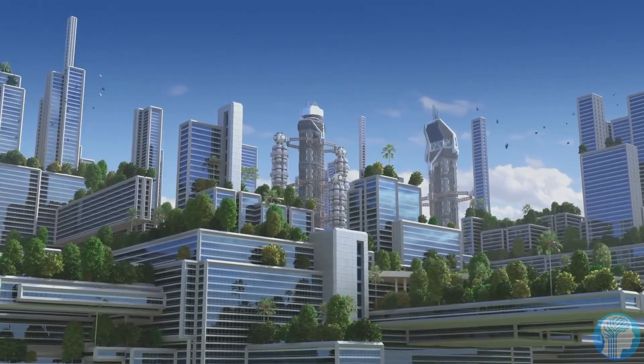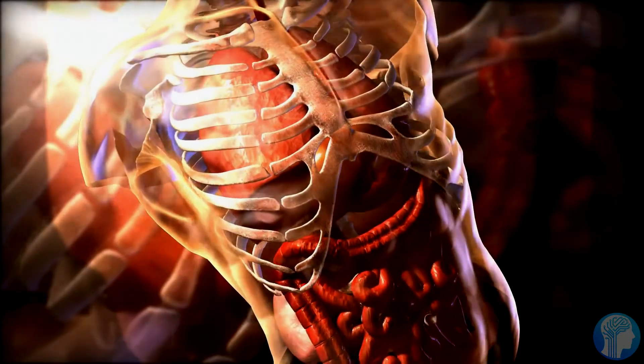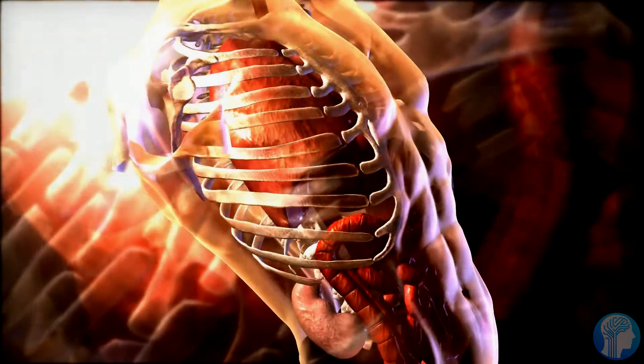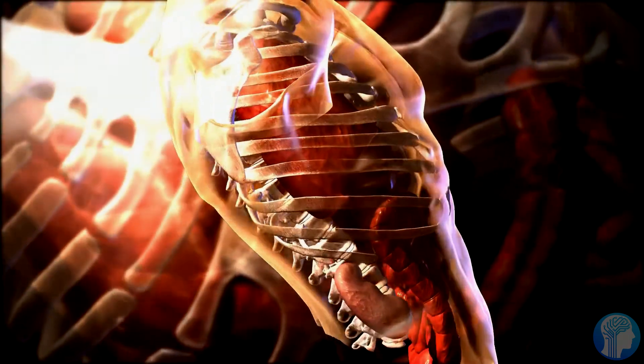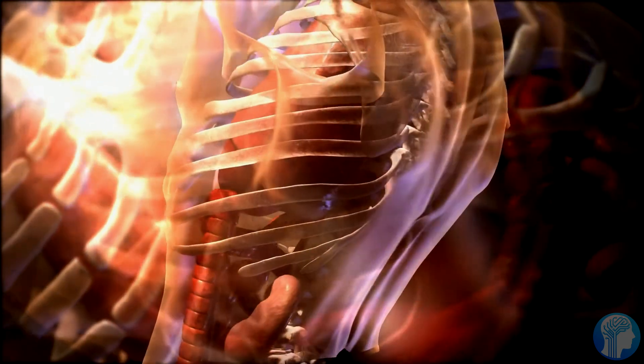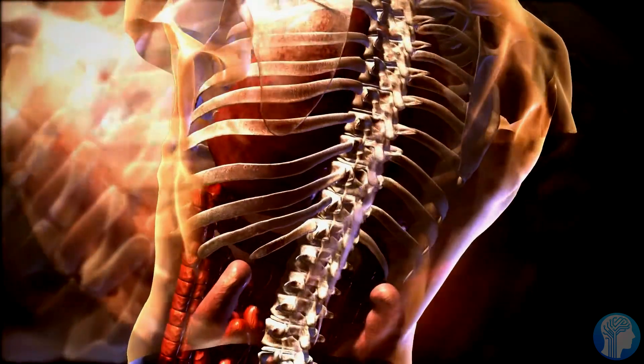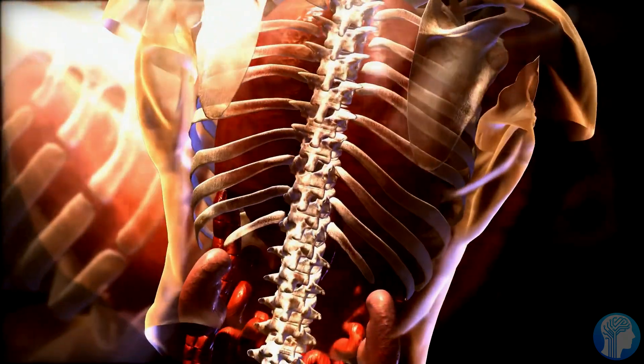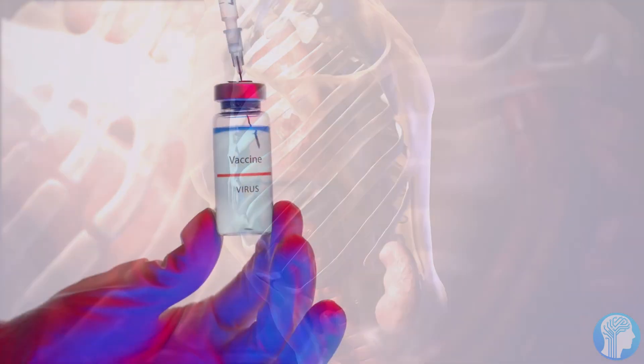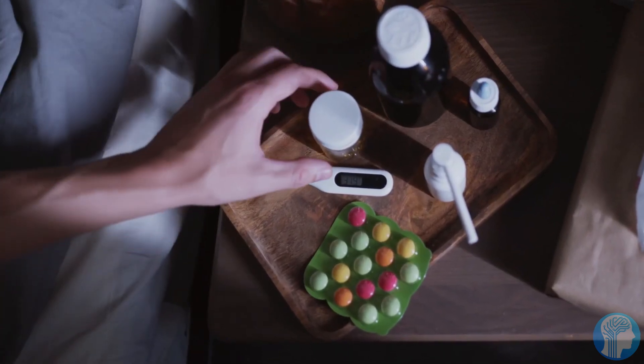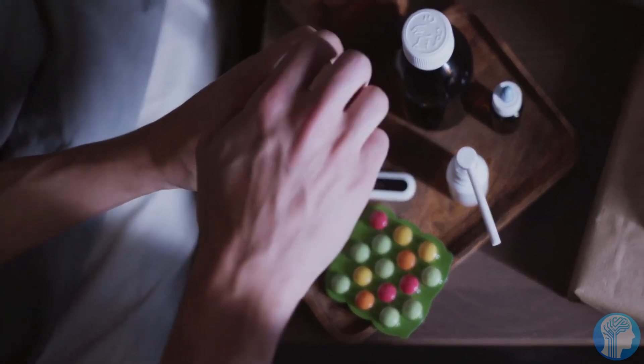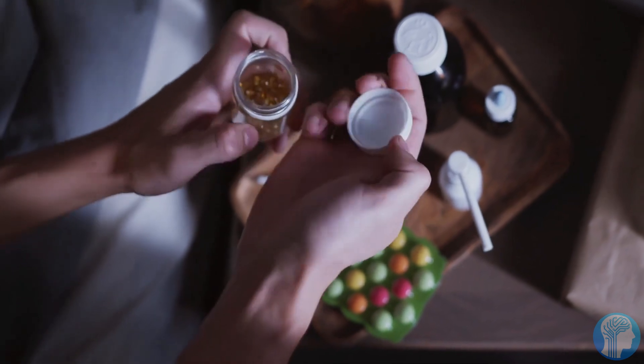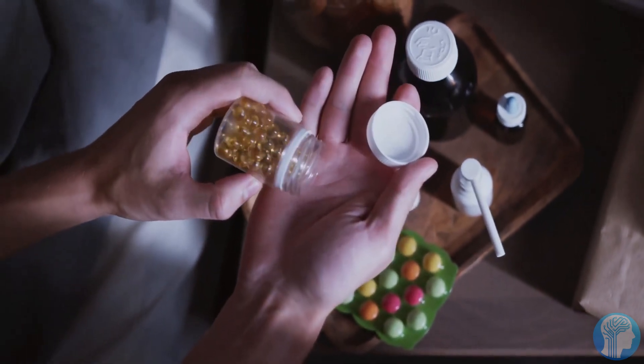This cut triggers our cell's repair machinery, which swoops in to fix the break. Now here's the genius part. Scientists can sneak in a new piece of DNA during the repair process. This new DNA acts like a genetic patch, replacing the old faulty sequence with the correct one. It's gene editing at its finest, a surgical precision that holds the potential to correct genetic mutations responsible for a myriad of diseases.